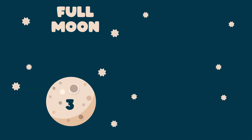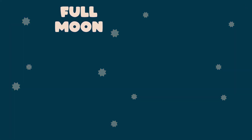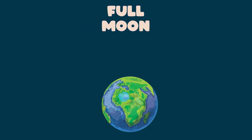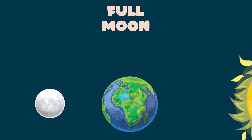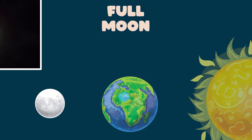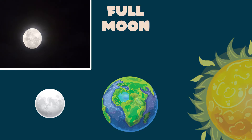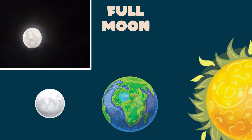Full Moon: this happens when the earth is between the moon and the sun and they are aligned. That is why we see the entire half of the moon illuminated — plump and complete in the sky.